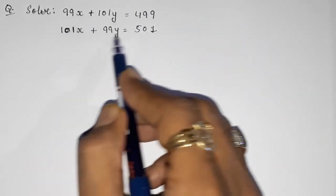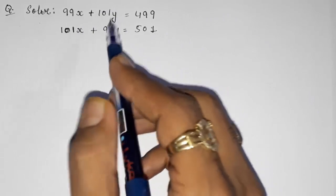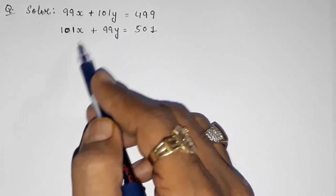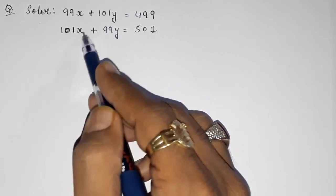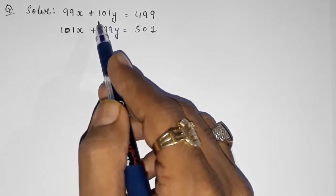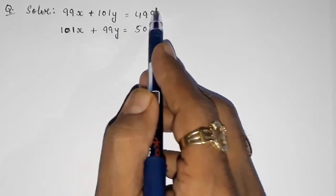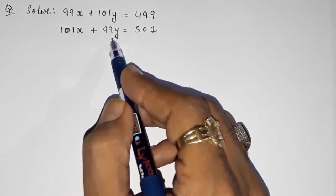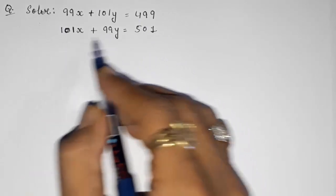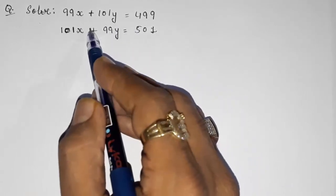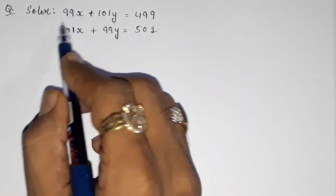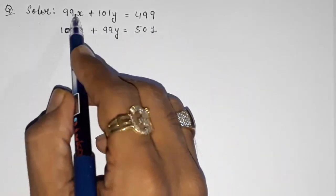Everybody will think this question is simple, but if you try to eliminate, substitute, or use cross multiplication, this sum is very time-consuming — it will take you more than 10 minutes. So I am going to give you a short trick. First, what you have to do is add these two equations.